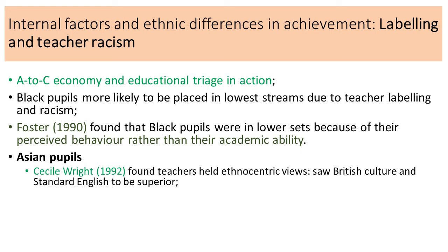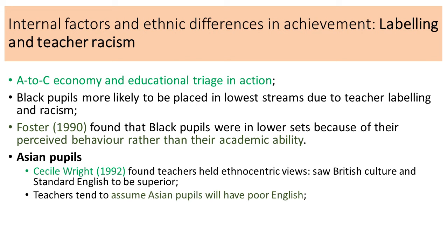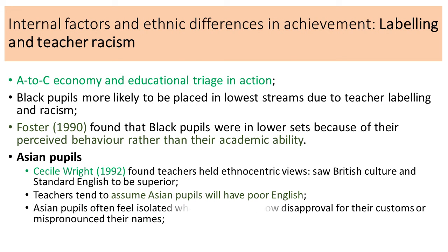In terms of Asian pupils, Cecil Wright found teachers held ethnocentric views and saw British culture and standard English as superior to Asian culture or Asian dialects and languages. Teachers tended to assume Asian pupils would have poor English, even though on many occasions those Asian pupils were born in the UK, their parents may also have been born in the UK, and they speak English at home with a very good standard of written and spoken English.